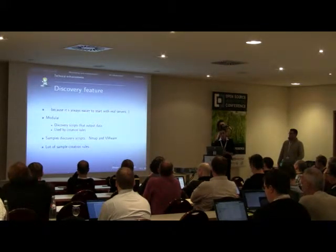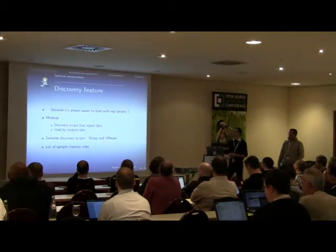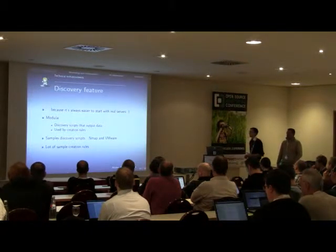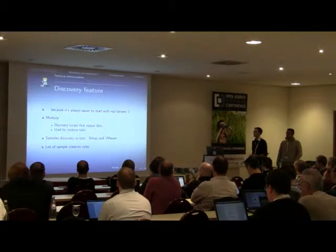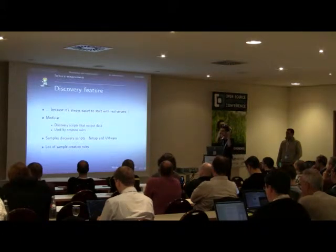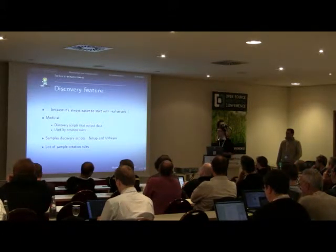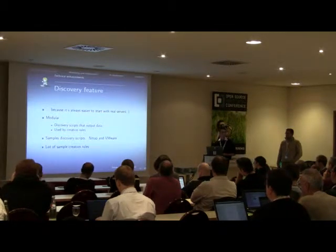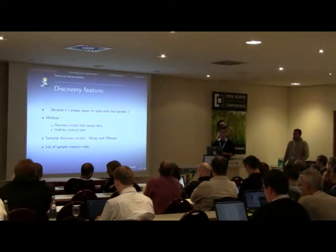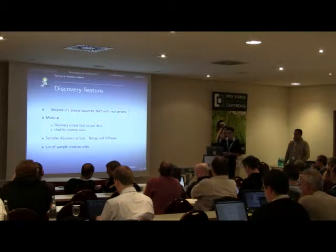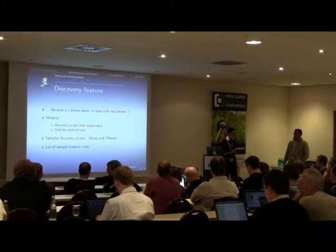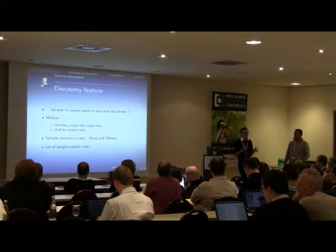If you don't already have a Nagios or Icinga setup, you can use the discovery feature. It's quite good for starting with already good configurations. It uses Nmap and VMware data to create your host configuration with standard services like HTTP, FTP, Linux, Windows — whatever you want. You have a lot of possibilities to create your rules: if this port is open, create this service; if this port or not that one is open, create another.